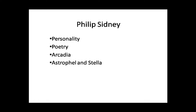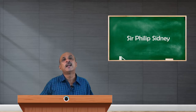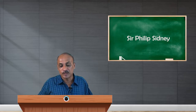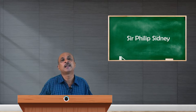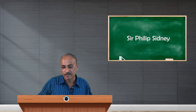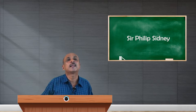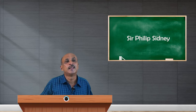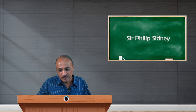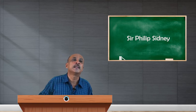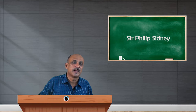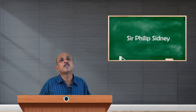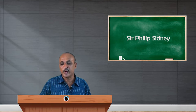Arcadia is one significant poem of Sir Philip Sidney, and another significant poem is Astrophel and Stella. Astrophel and Stella is, like the previous one, very much lyrical in nature. It is one of the fine examples of lyrical love poetry.